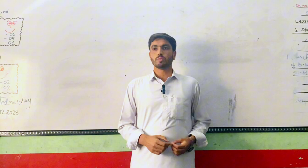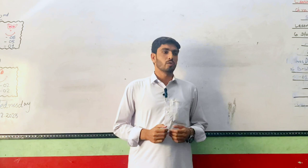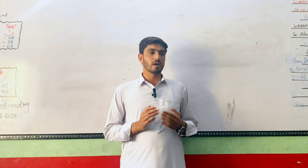Diabetes mellitus is a serious disorder in which the glucose level in the blood increases from the normal level. The normal level of glucose in the blood is 70 to 110 mg per dL.